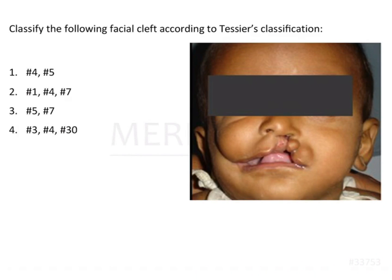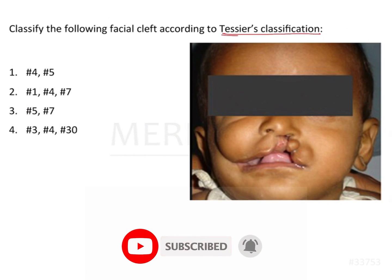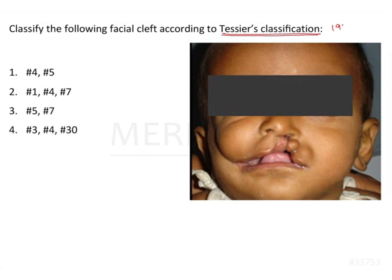Here is an image-based question where a pediatric patient's facial picture is given, showing numerous facial clefts evident at multiple sites. Based on the picture, the question asked is to classify the following facial cleft according to Tessier's classification. As per the facial cleft classified by Paul Tessier in 1976, we have to categorize the various clefts seen in the picture and conclude which type of facial cleft it is as per Tessier's classification.